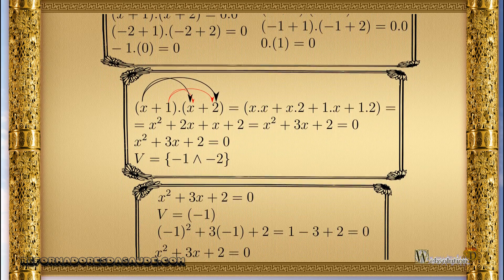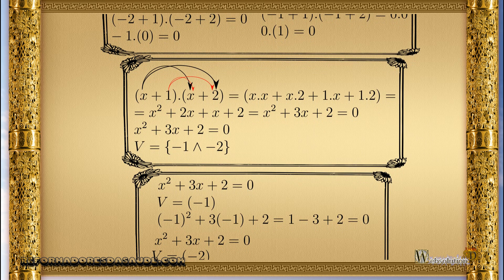So we have two values that make the equation true: both minus 1 and minus 2. If we know the first-degree equations that form the second-degree equation, we can easily determine the roots — the values that make the equation true.